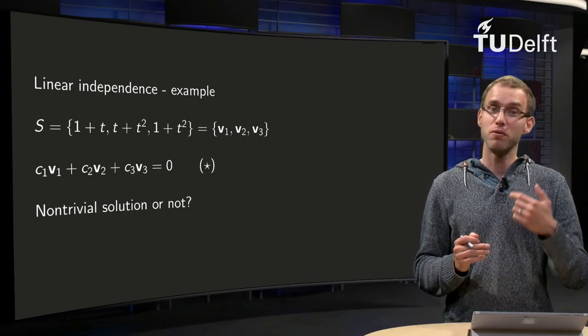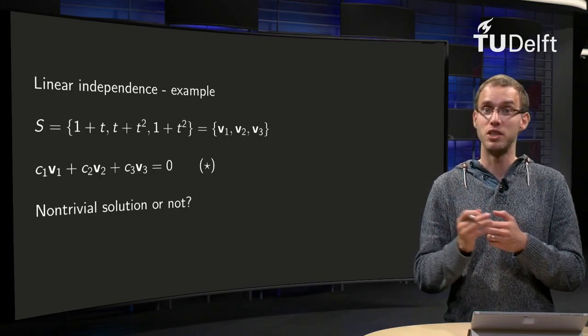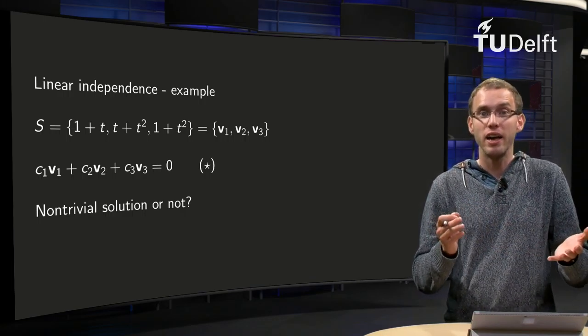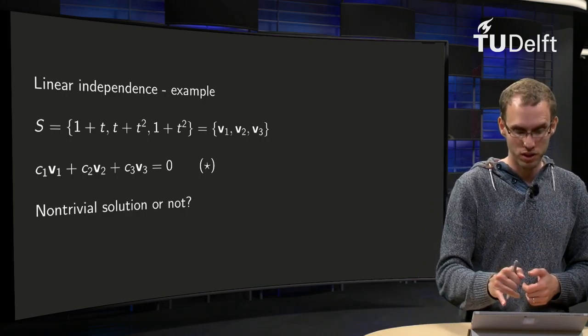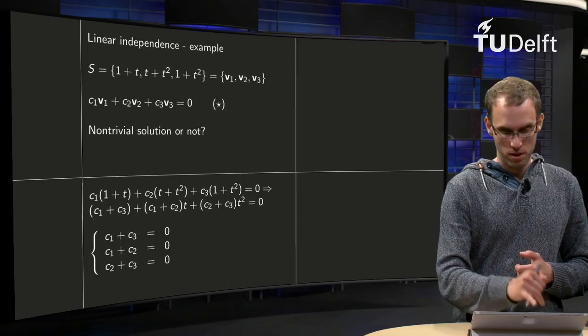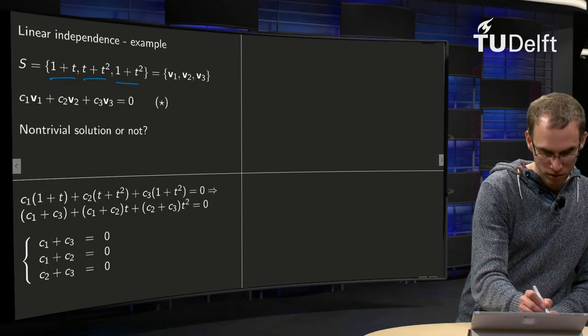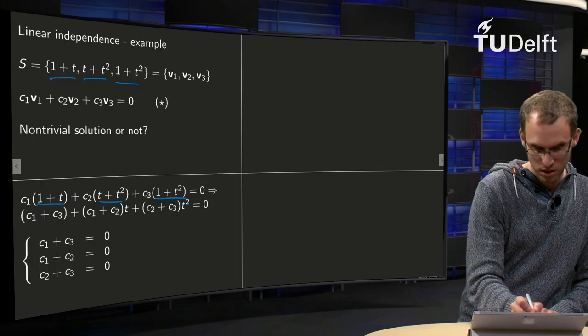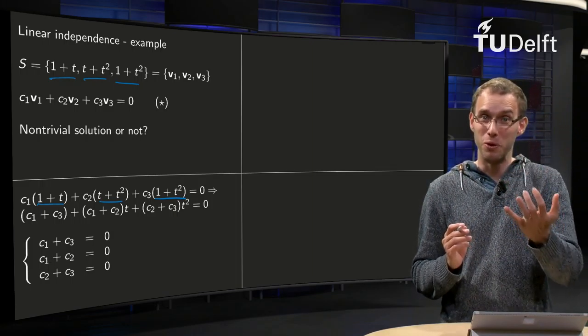A set is dependent if the only solution of the equation c1 v1 plus c2 v2 plus c3 v3 equals zero is the trivial solution. So let's see what happens if we try that and see what happens. Can we find a non-trivial solution of this equation or not? So we plug in v1, v2, and v3. So we have c1 times v1 plus c2 times v2 plus c3 times v3 equals zero, where the zero now is the zero polynomial, so that means the polynomial which is zero for all values of t.